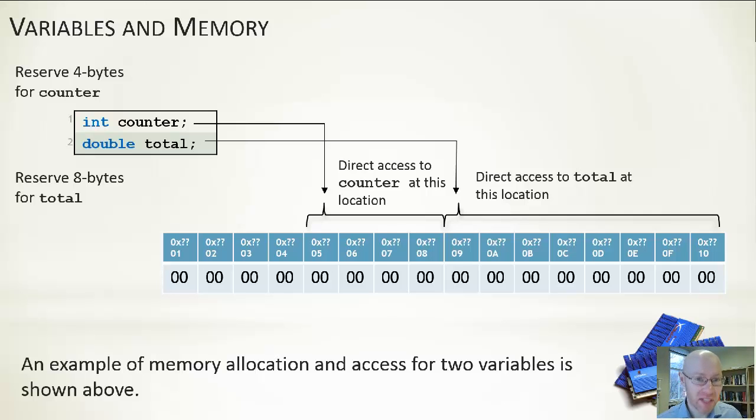The int type associated with counter tells us how many bytes—in this case four, in most cases in C++—we need to read from that particular location to read in that integer. So you can see, notionally, we're reserving from byte 5, 6, 7, and 8. They're the bytes we will reserve, we'll set aside, we'll associate with our counter variable. The integer type also tells us how we should process those ones and zeros. We need to know how to process those ones and zeros—if it's signed, if it's unsigned, if it's floating point, if it's not.